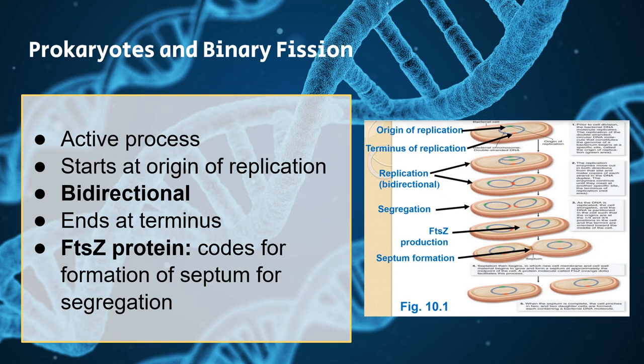Talking a little bit more about prokaryotes and their asexual binary fission process. This is an active process, so it does require ATP. It's going to start at the origin of replication and move bidirectionally in both directions until it reaches the terminus. Then it'll start forming a septum in the middle, until it eventually pinches off and separates into two identical cells. To make that septum, you're going to have the FtsZ protein, which codes and tells the cell to form that septum.